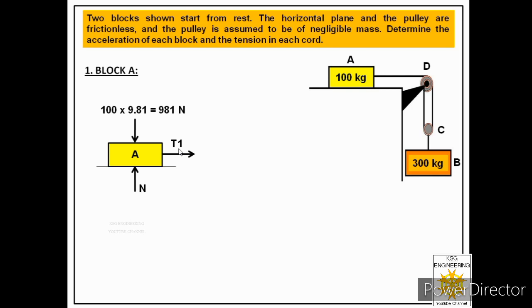Since the horizontal surface and pulley are frictionless, there is no friction force in this free body diagram. So the only forces acting on block A are its weight, the normal reaction, and tension T1. The free body of block A is now complete.